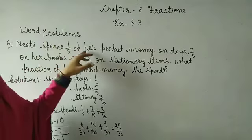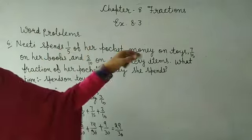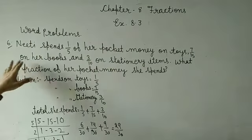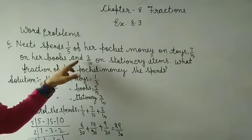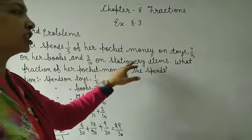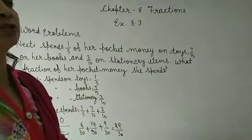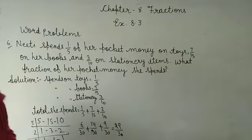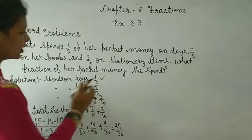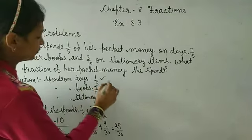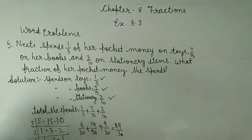Question 6: She spends 1 upon 5 of her pocket money on toys, 7 upon 15 on her books, and 3 upon 10 on stationary items. What fraction of her pocket money does she spend? Solution: Spend on toys 1 upon 5, spend on books 7 upon 15, spend on stationary 3 upon 10. We'll add all three.